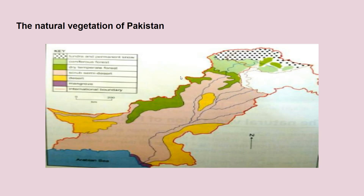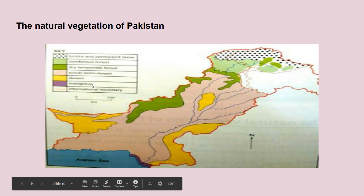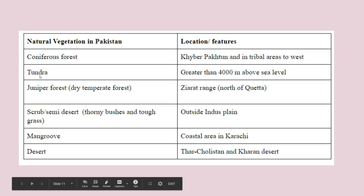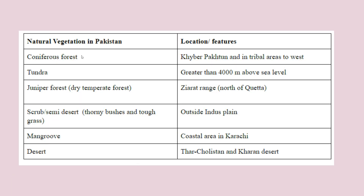Now we need to know what types of natural vegetation we have in Pakistan. We have tundra, meaning 4000 meters of height is achieved in those areas. We have coniferous forest in Khyber Pakhtunkhwa. We have dry temperate forest north of Quetta in the Ziarat range. We have scrub and semi-desert vegetation in the Indus plain. We have deserts in Thar and Cholistan, and mangroves near the coastal area. A table has been made showing all these natural vegetations and their locations.